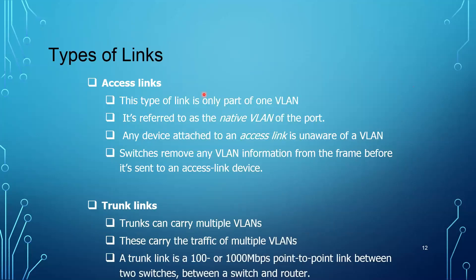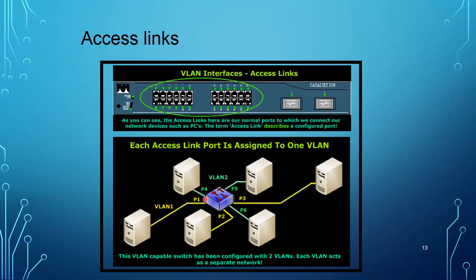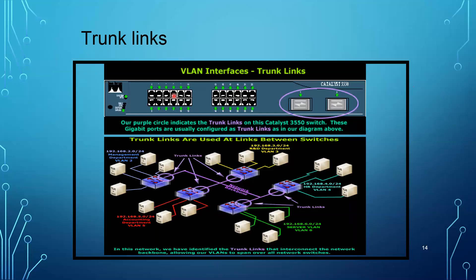We have two types of port configuration: the access link and the trunk link. The access port is the port connected to a certain end device and belonging to a certain VLAN. However, the trunk port connects two or more switches together and sends all VLAN traffic through those ports. Normally trunk ports are faster than access ports because they are expected to carry a much higher volume of traffic compared to access ports, since they carry all VLAN traffic.